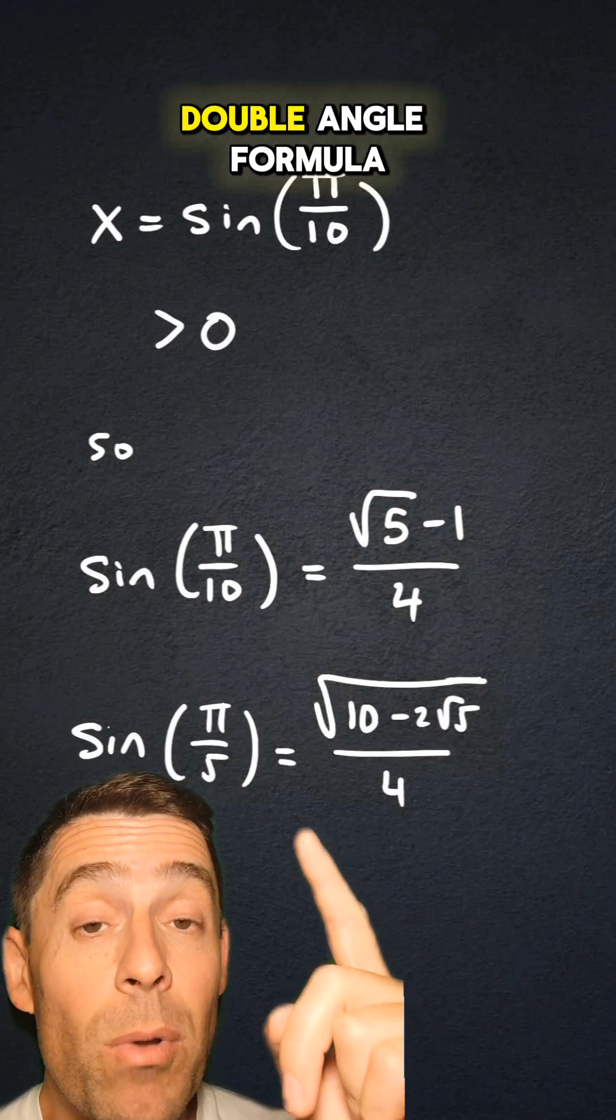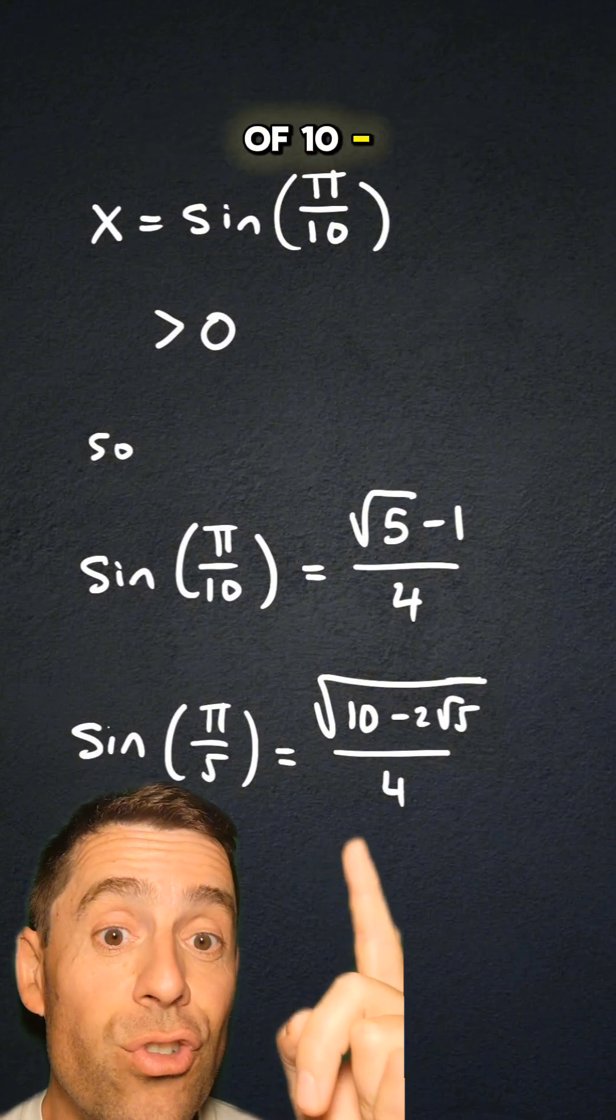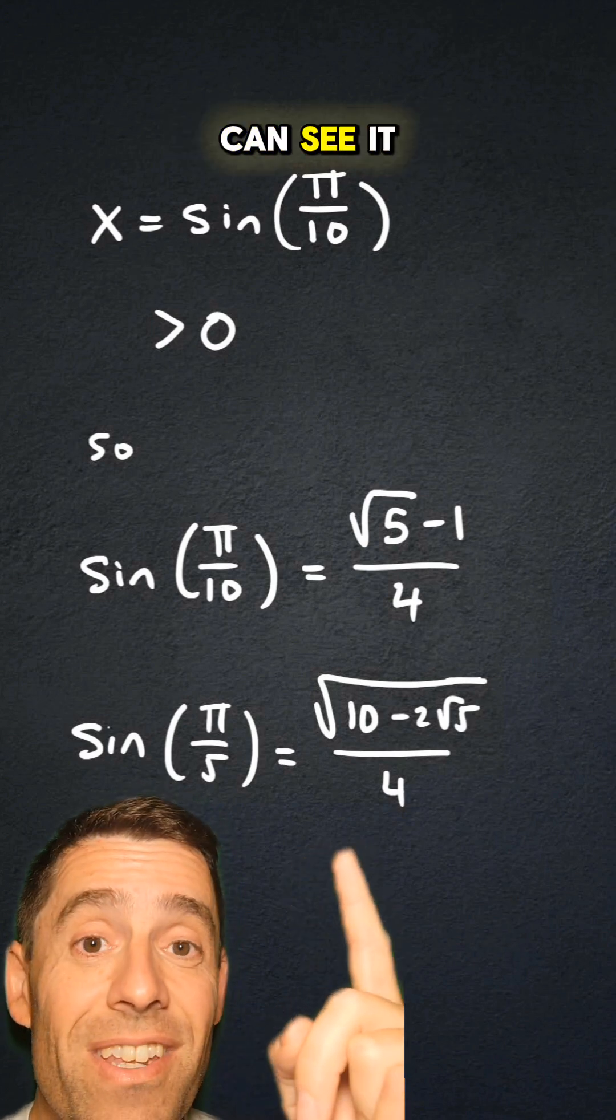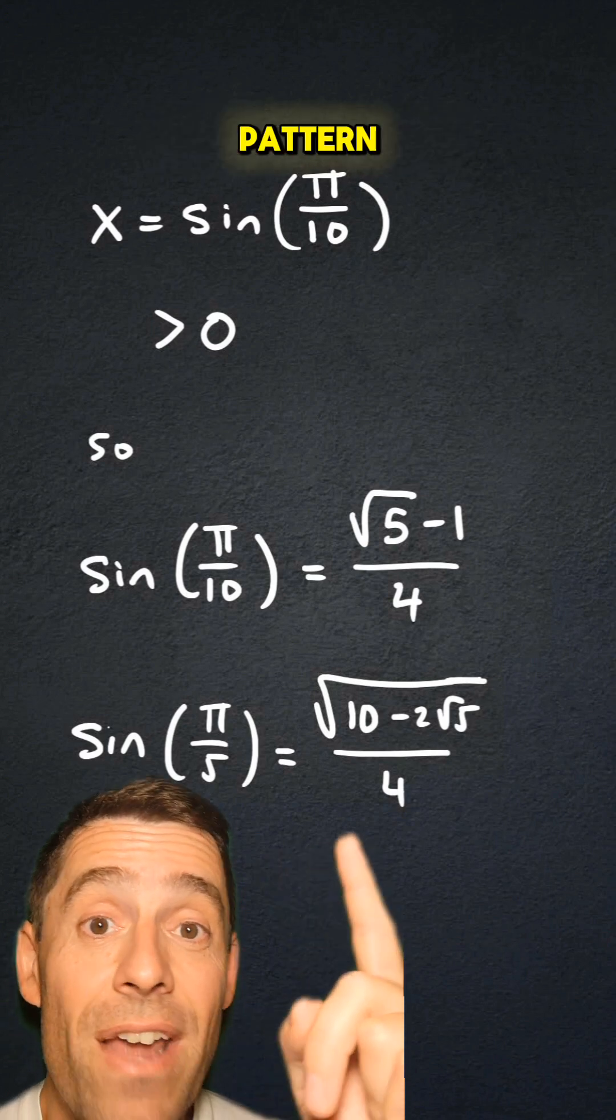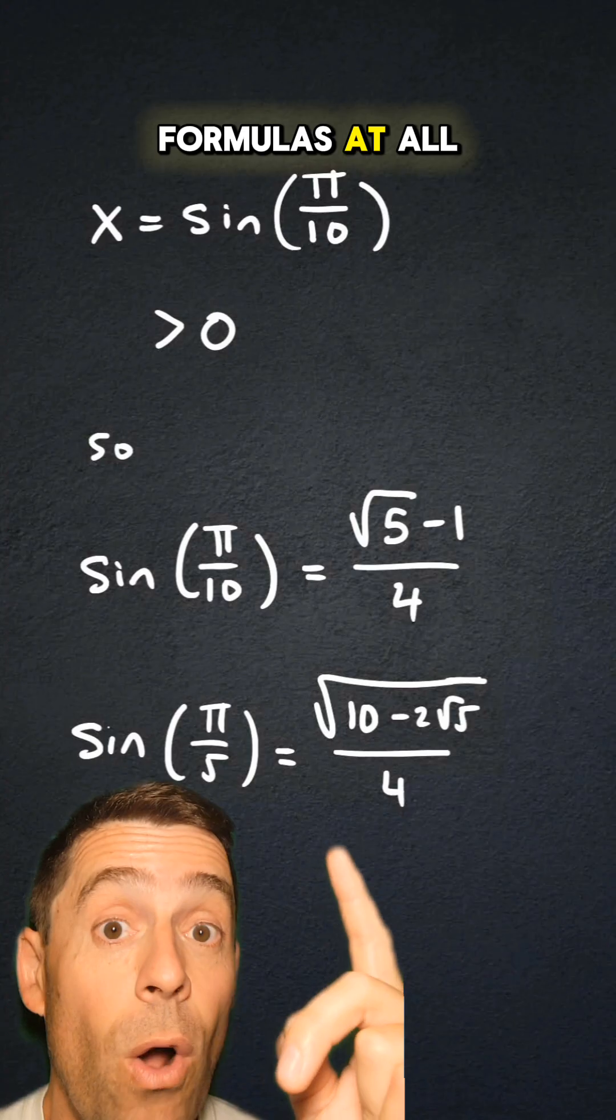And by the double-angle formula, the sine of π/5 will be the square root of 10 minus 2 times the square root of 5 divided by 4, which, as you can see, it doesn't fit that pattern we saw at the beginning for the common angle formulas at all.